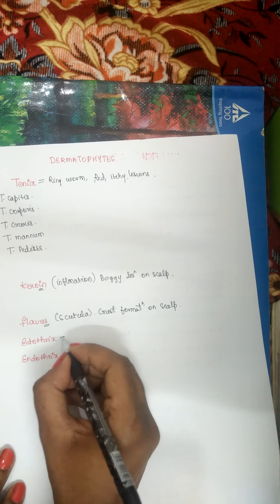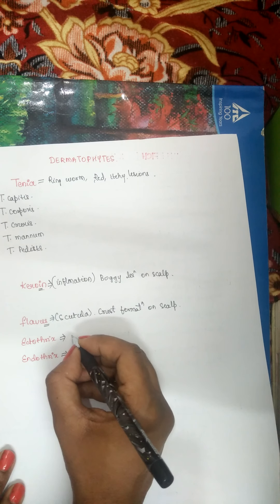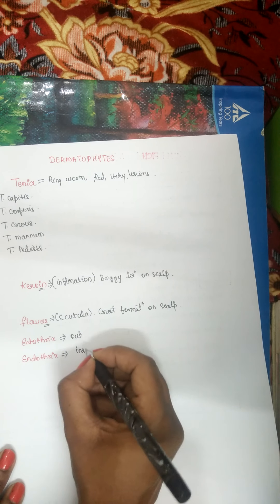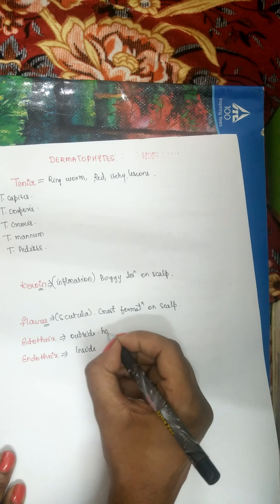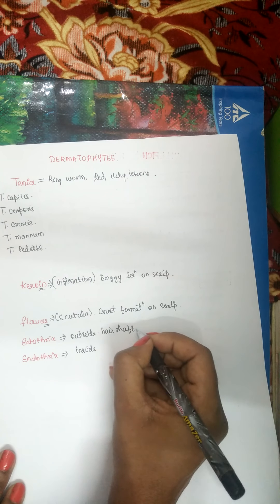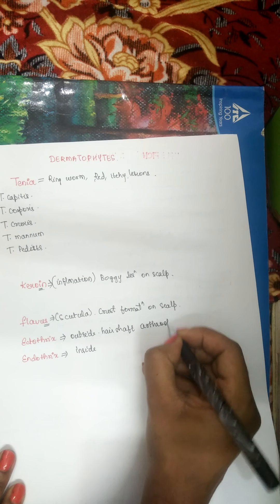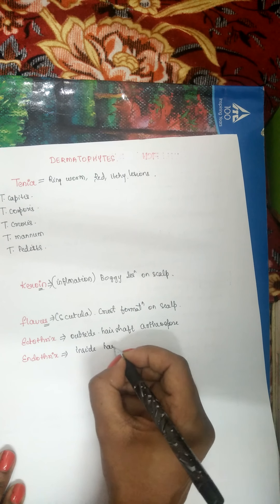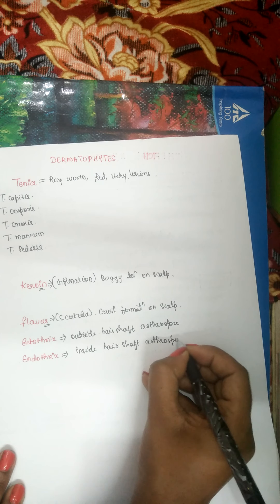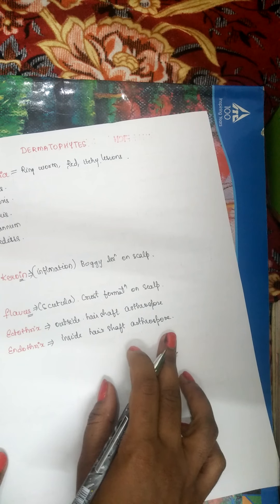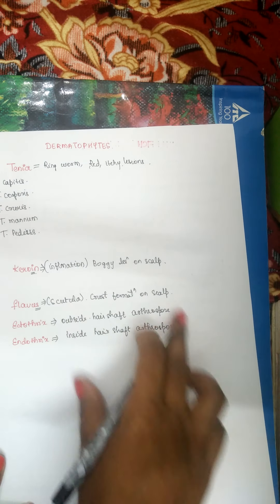Ectothrix and endothrix: 'ecto' means outside and 'endo' means inside — the word itself tells you the location. In ectothrix, arthrospores are present outside the hair shaft. In endothrix, arthrospores are present inside the hair shaft.